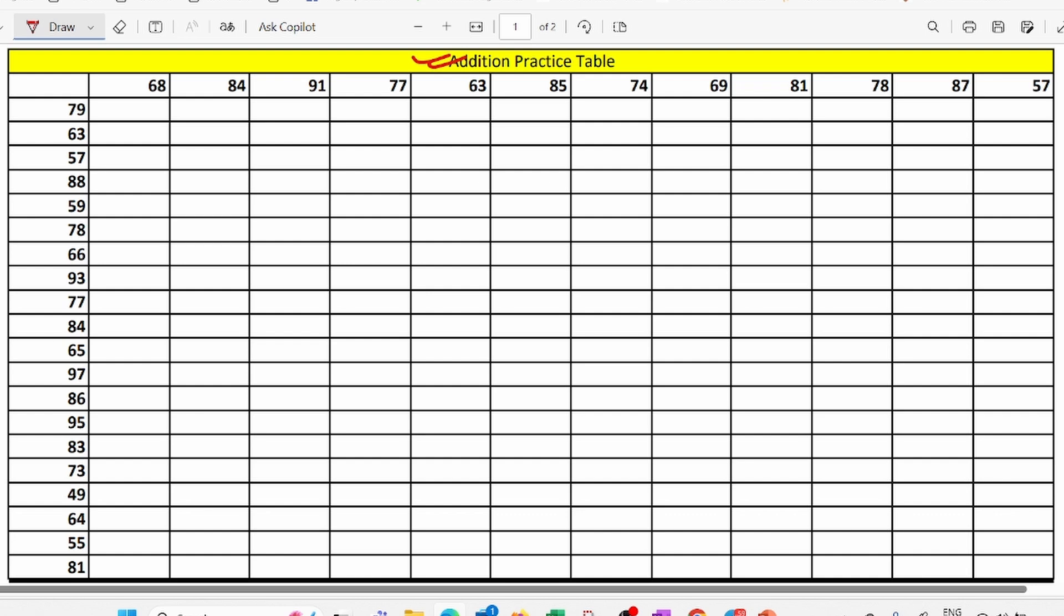Now let's see how you are supposed to practice from this table. You can see here number 68 and then a number 79. You have to take 68 as base and add 79 to it. So 68 plus 9 would become 77 and 77 plus 70 would become 147. So like this you have to add. Second number is 84. So 84 plus 9 here, it will become 93 plus 70 would become 163. So like this you are supposed to practice. Give 5 to 10 minutes to this chart daily. And you will see rapid improvement in your calculation.